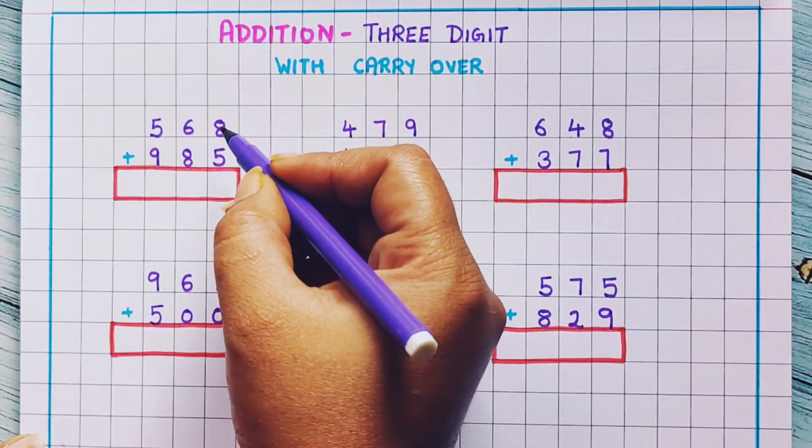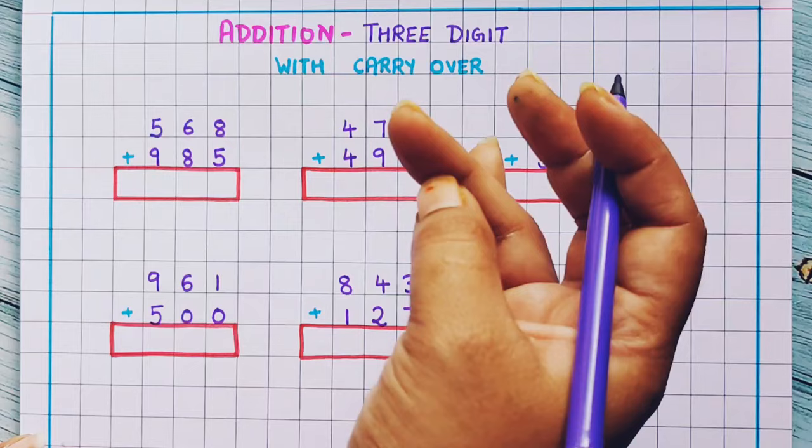8 plus 5: keep 8 in your mind and put 5 fingers out. 9, 10, 11, 12, 13.